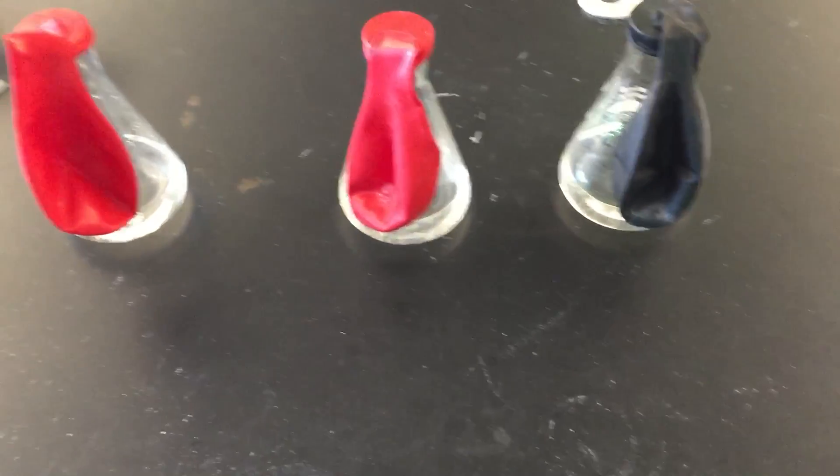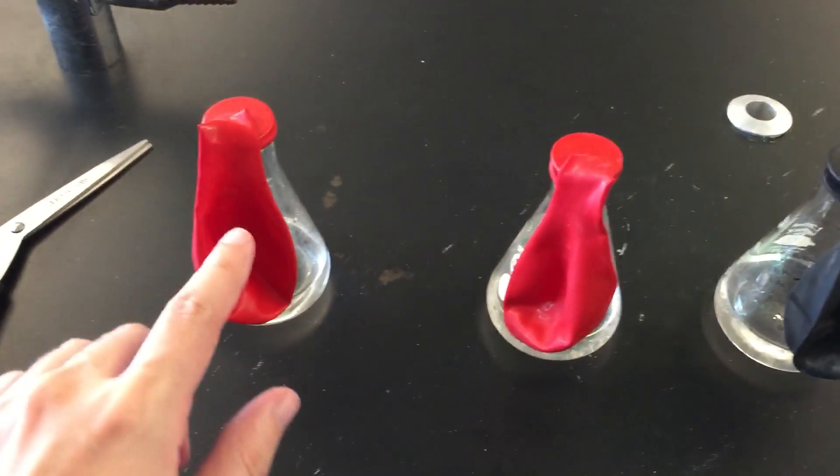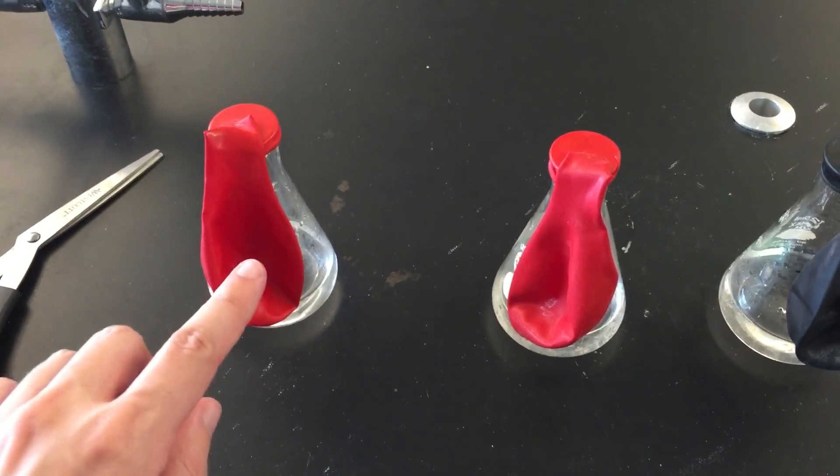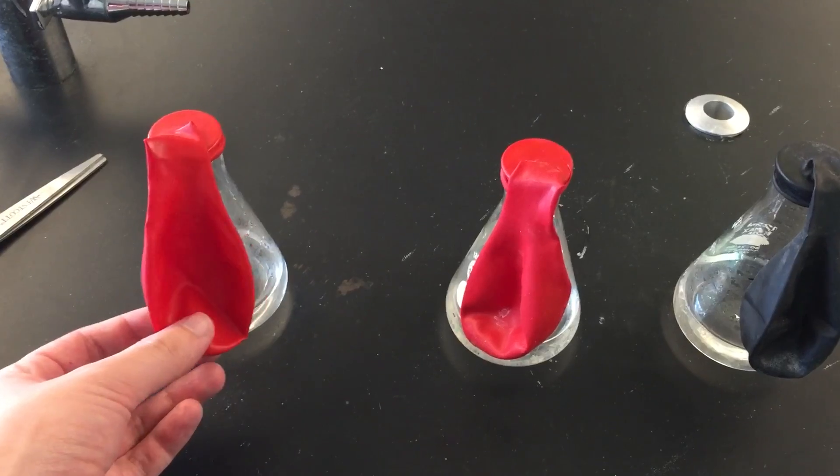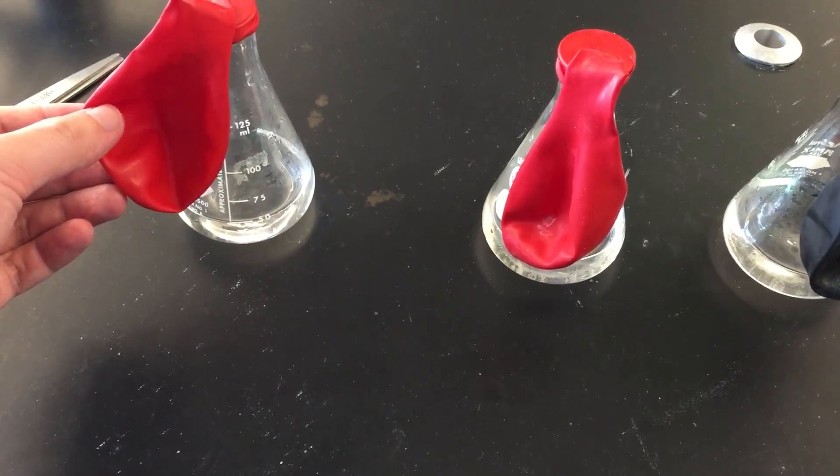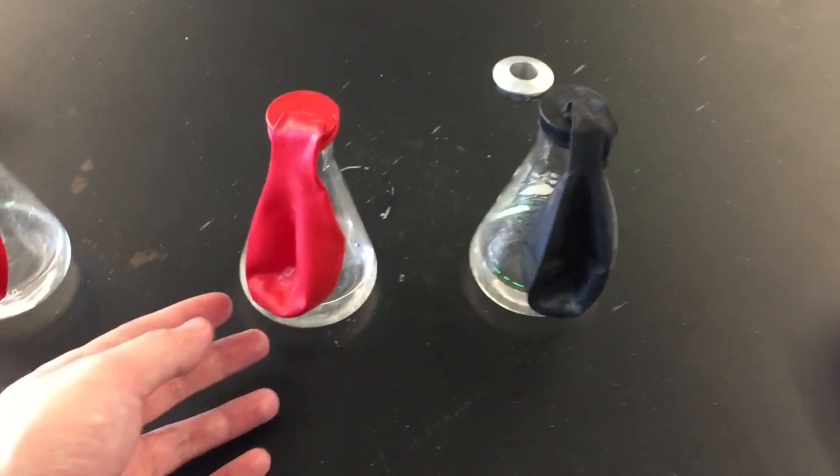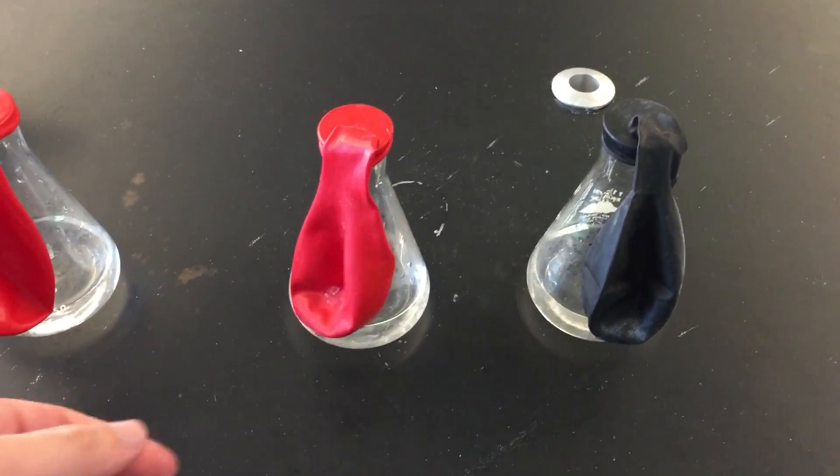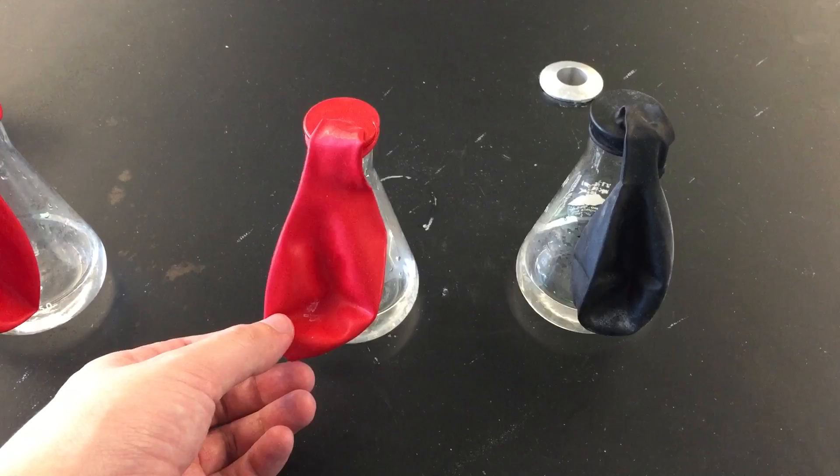So here are our flasks. This has our 1.5 grams of sodium bicarbonate inside of the balloon and you can see that there are 50 grams of vinegar in the bottom here. This is our flask number two. This has our 3.50 grams of sodium bicarbonate and again the same amount of vinegar in the bottom.